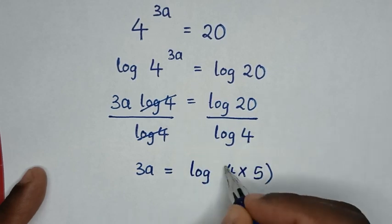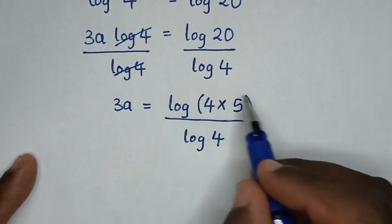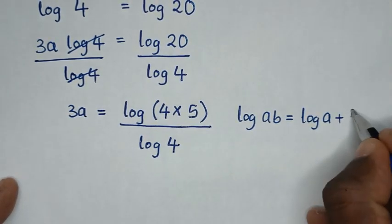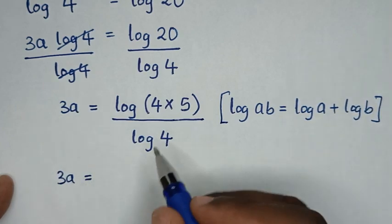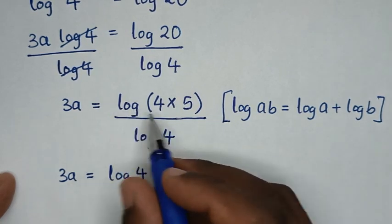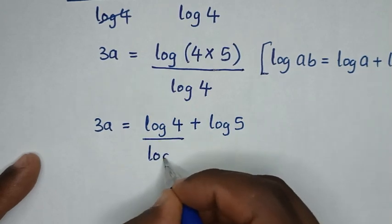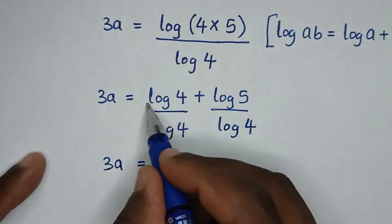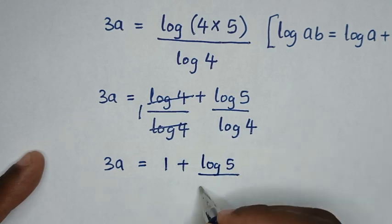Now 20 equals 4 times 5, so we write log of 4 times 5 over log of 4. This part, log of 4 times 5, is in the form of log of a times b which equals log of a plus log of b. Applying this rule, 3a equals log of 4 plus log of 5, all over log of 4. Dividing each term by log of 4, log of 4 over log of 4 is 1, so it becomes 1 plus log of 5 over log of 4.